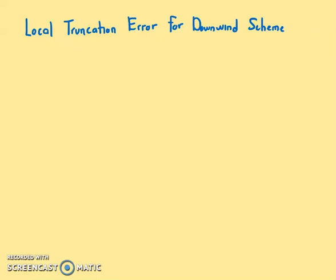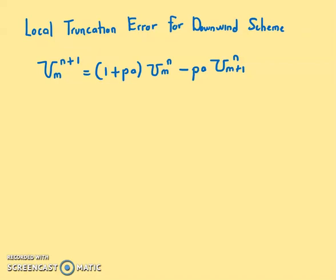In this video we want to show the local truncation error for the downwind scheme. The downwind scheme is given by U(m, n+1) equals 1 plus Pa times U(m,n) minus Pa times U(m+1, n). This downwind scheme is an example of a numerical approximation for the hyperbolic equation. One example of a hyperbolic equation is the wave equation, given by Ut plus a*Ux equals zero, which is also the advection equation.